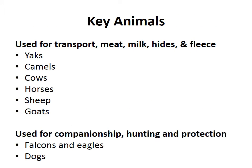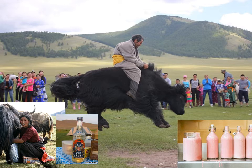Now we're going to have a look at some of the key animals that the Mongolians used for transport, milk, meat, hides, fleece, companionship, hunting, and protection. This is the Mongolian yak — long, fleecy fur, pink milk that can also be further distilled into a yak vodka, and very nutritious meat. Yak burgers are a specialty in Ulaanbaatar. It's a great stocky animal with big horns for surviving out on the Mongolian steppe.